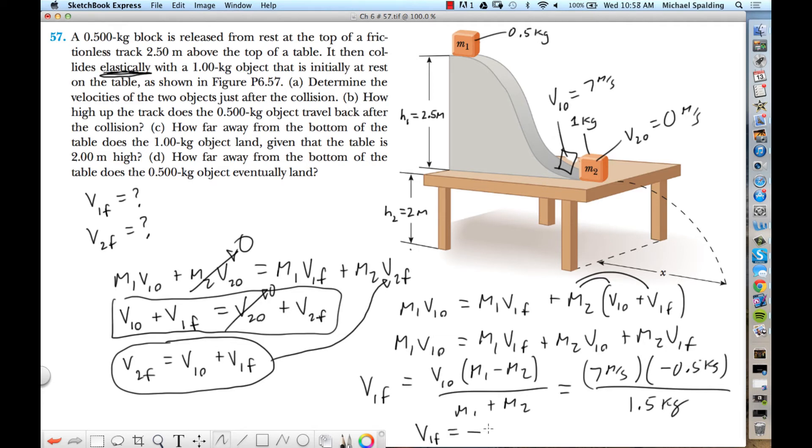V1 final comes out as negative 2.33. Why does it make sense that the final velocity of block one is negative? Because what happens to block one after the collision? It bounces back up the hill. It collides and rebounds. So negative just means to the left. Block number one after the collision goes back up the hill. And then V2 final, plug in over here, and that is 4.67.